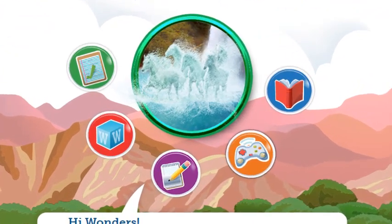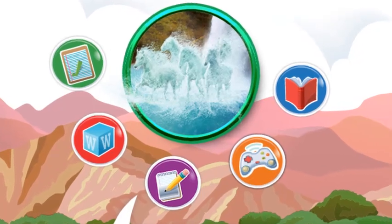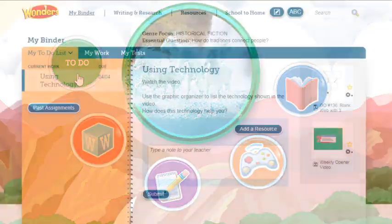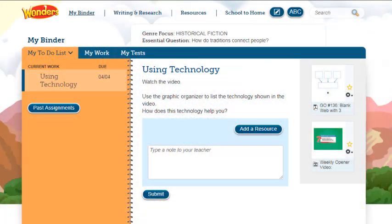Icons appear on the dashboard that let you quickly access resources needed for that week. To Do List opens the current To Do List in My Binder. These are the assignments for the week.